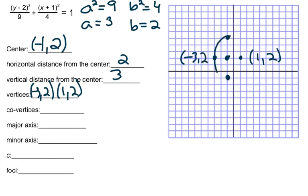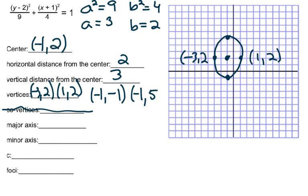Let's go ahead and draw the ellipse. Our other vertices — we're going to add to the k. So our x value stays the same. We're going to apply the a and say 2 minus 3, which is negative 1, and 2 plus 3, which is 5. So we have (-1, 5) and (-1, -1) as our coordinates. Now, what's the length of the major axis? Well, a is 3, so it's going 3 up and 3 down from the center — so the major axis is going to be 6. And the minor axis goes side to side: from the center you're going right 2, left 2, so the minor axis length is 4.